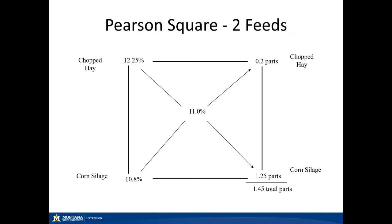Now looking at our Pearson square, we can utilize two feed ingredients, whether that is a mixture or a single feed ingredient. The number in the middle — this 11% — must fall between the two feeds on the left. As you can see, we have chopped hay at 12.25% in the top left and 10.8% in our bottom left for corn silage. This is all done on a dry matter basis — this is how we develop our rations. This removes the water factor because that can dilute our numbers and puts all feed ingredients on the same level. In step four, I'll demonstrate how we move back to an as-fed basis.